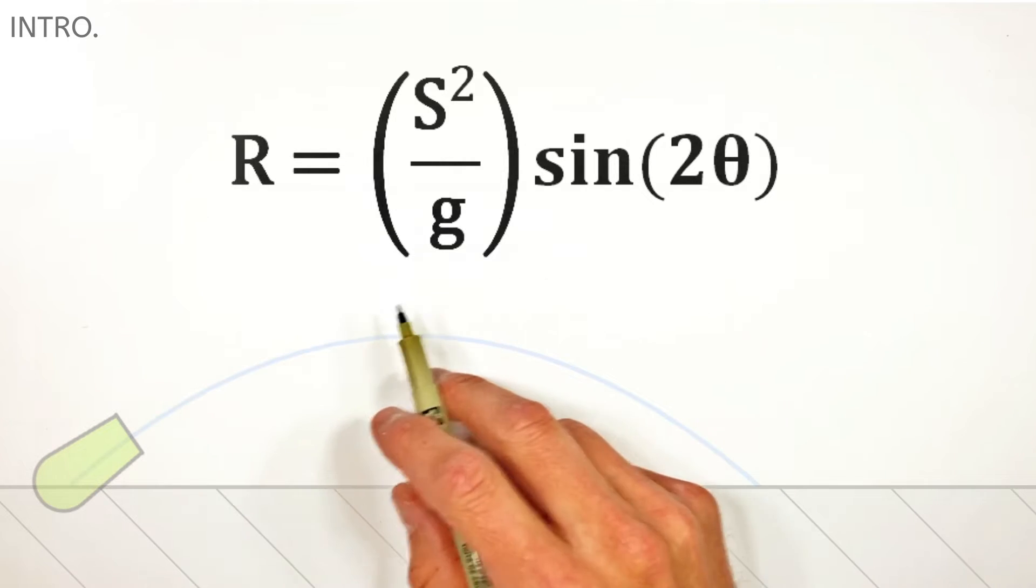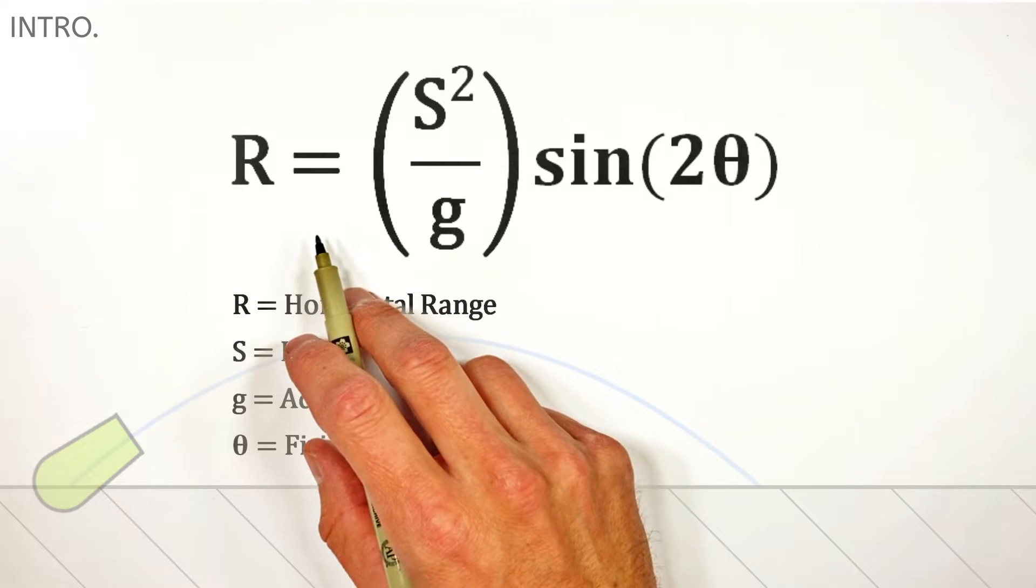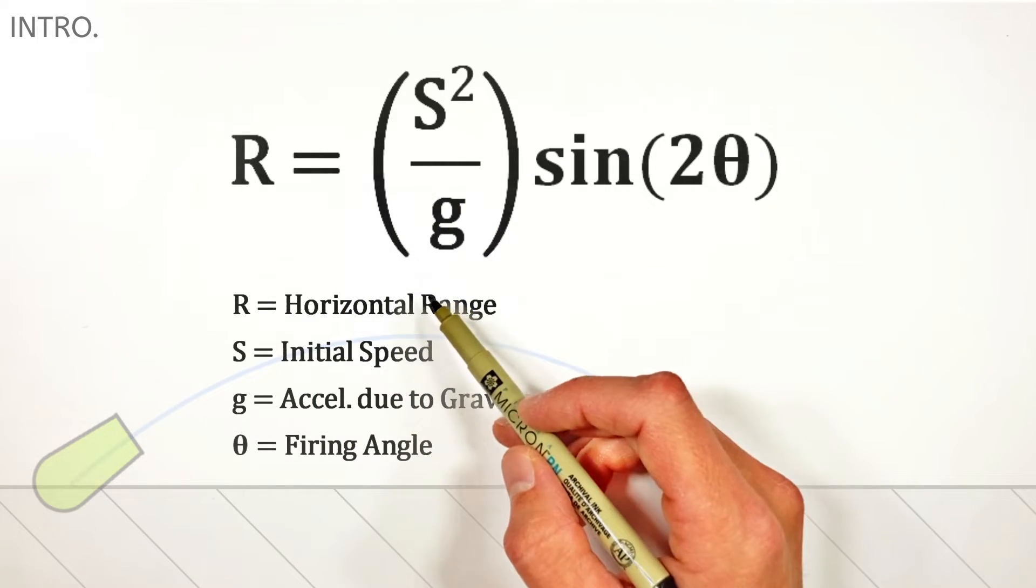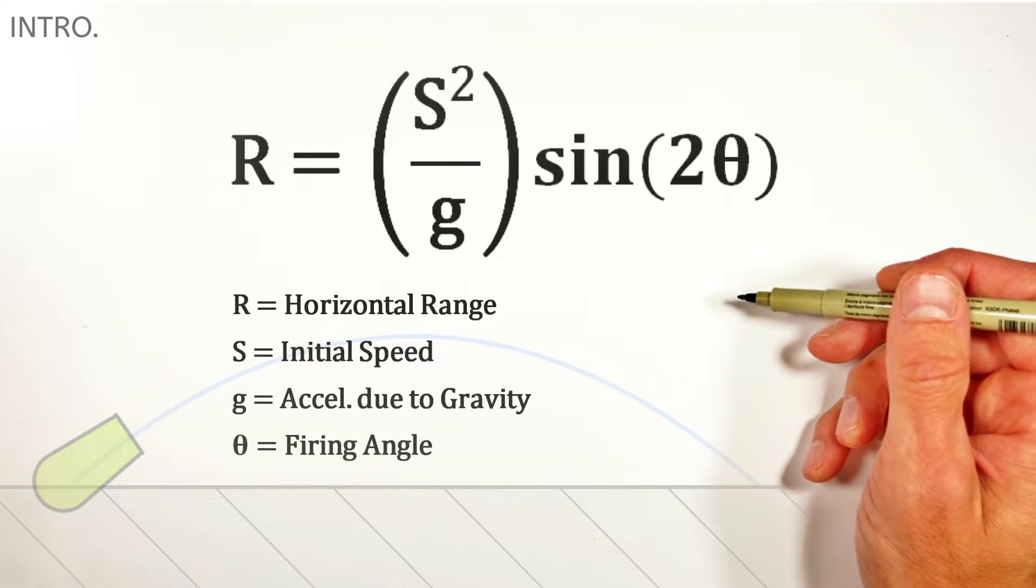You see, at first this range equation is pretty easy to use. It tells us the range of a projectile, or something being shot through the air, as a function of that projectile's initial speed, the acceleration due to gravity, and the firing angle, or initial direction, of that projectile.